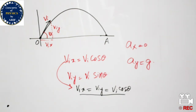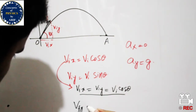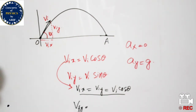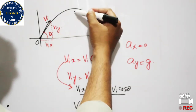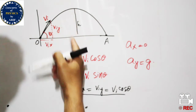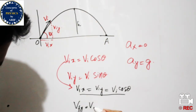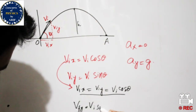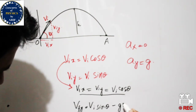In the vertical direction, the final vertical velocity Vfy is affected by gravitational pull. At maximum height, Vfy = Vi·sin(θ) − g·t. This term is reduced over time due to the effect of gravity on the vertical component of velocity.